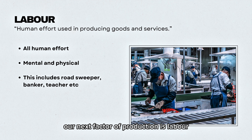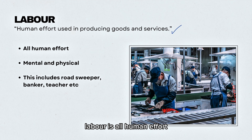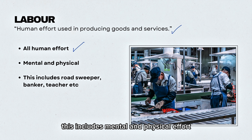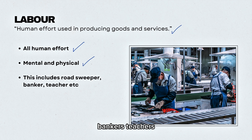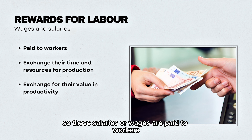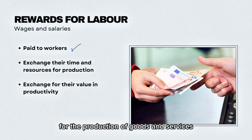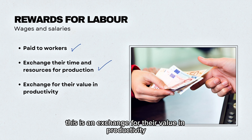The next factor of production is labour — the human effort used in producing goods and services, including both mental and physical effort. Examples include road sweepers, bankers, teachers, and so on. The reward for labour is salaries or wages, paid to workers in exchange for their time and resources in the production of goods and services, representing their value in productivity.